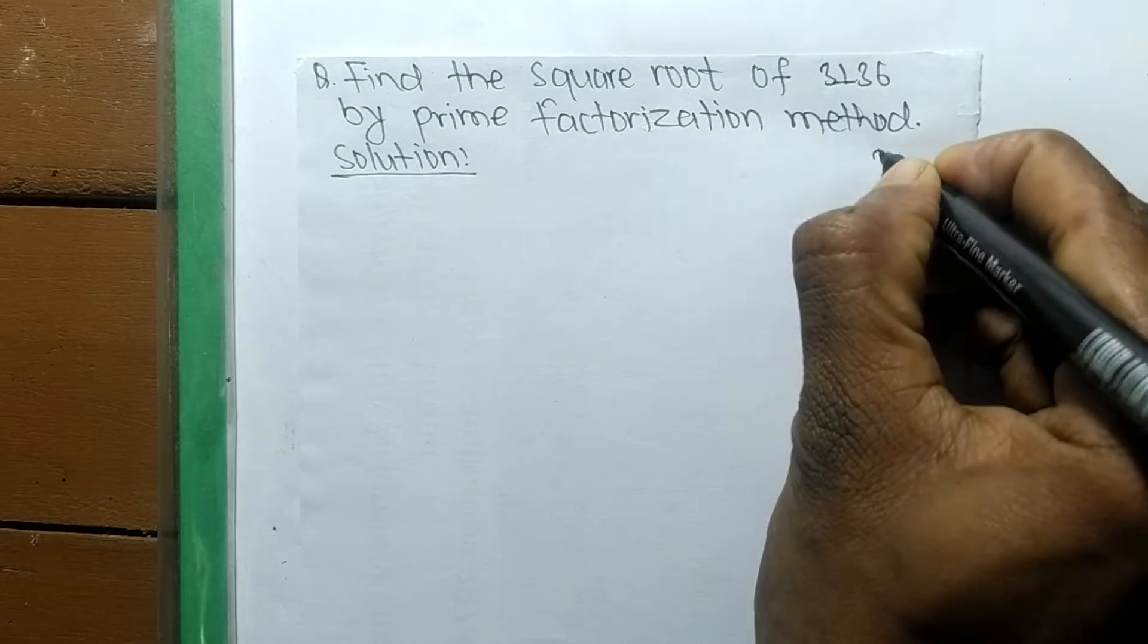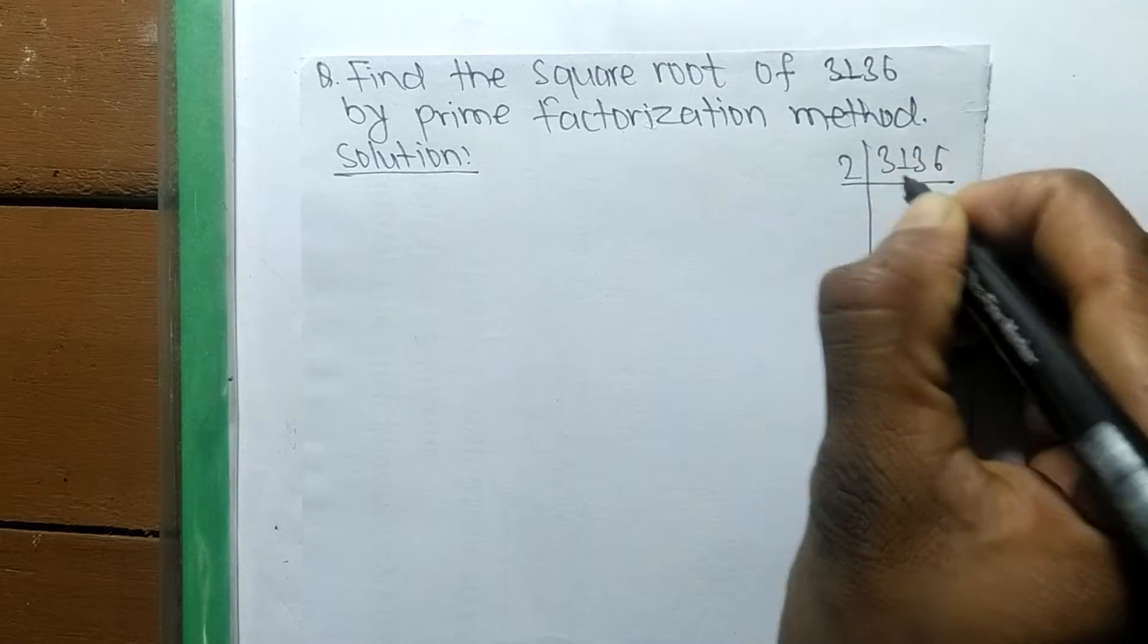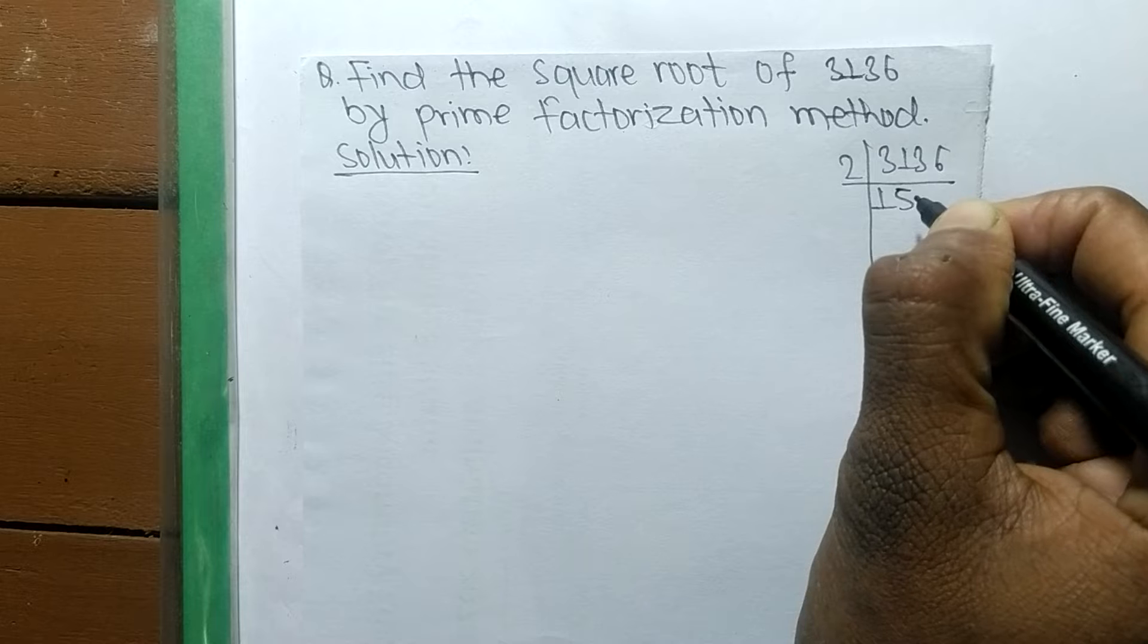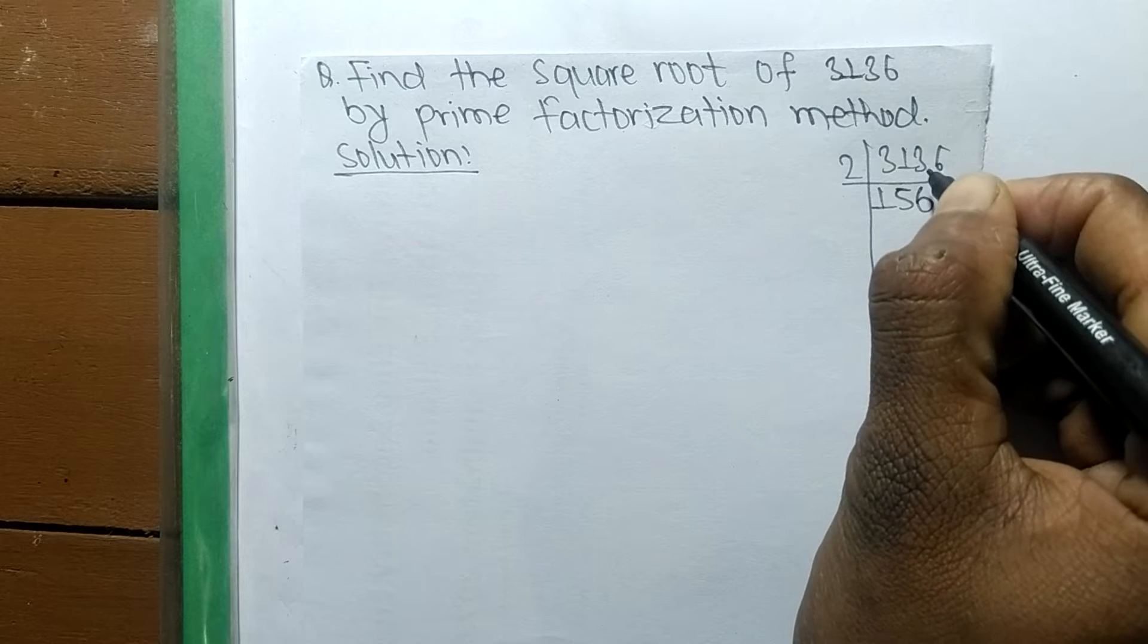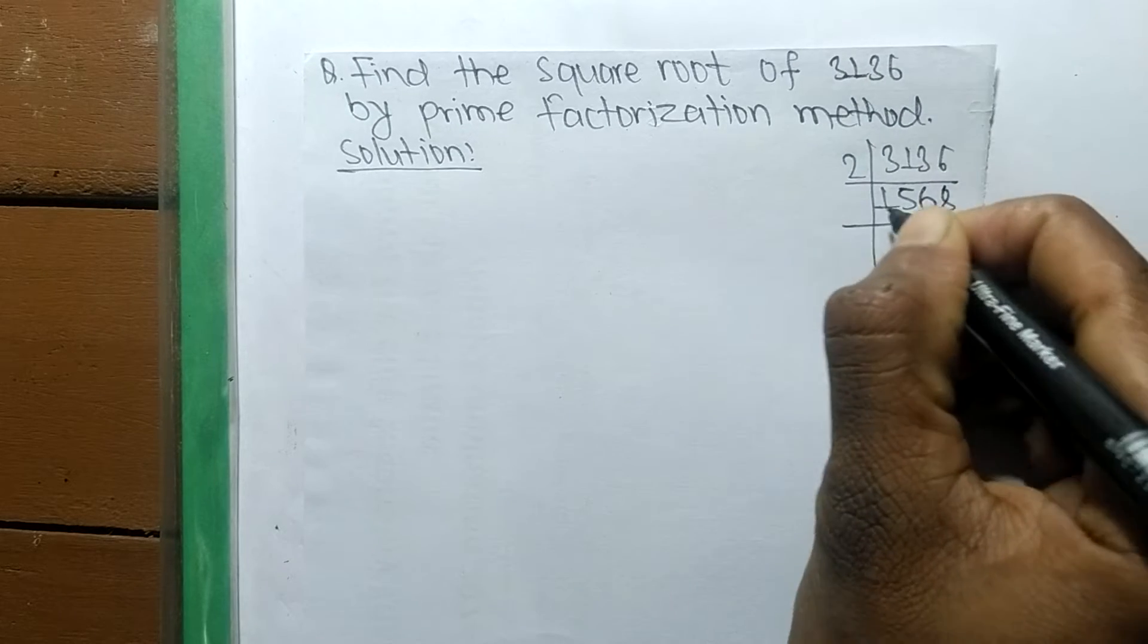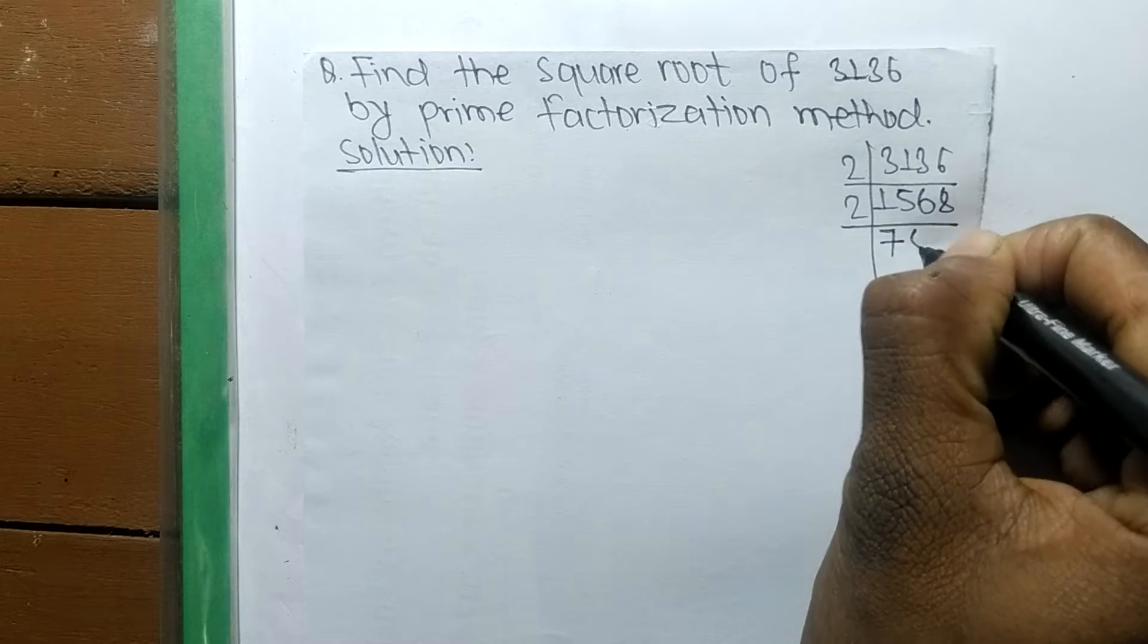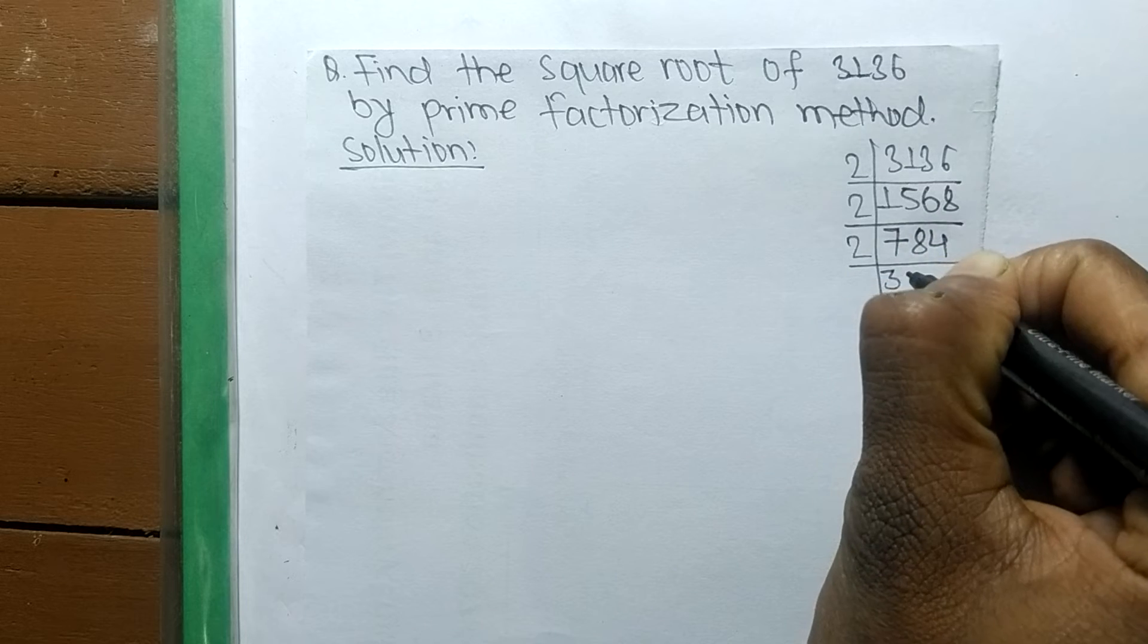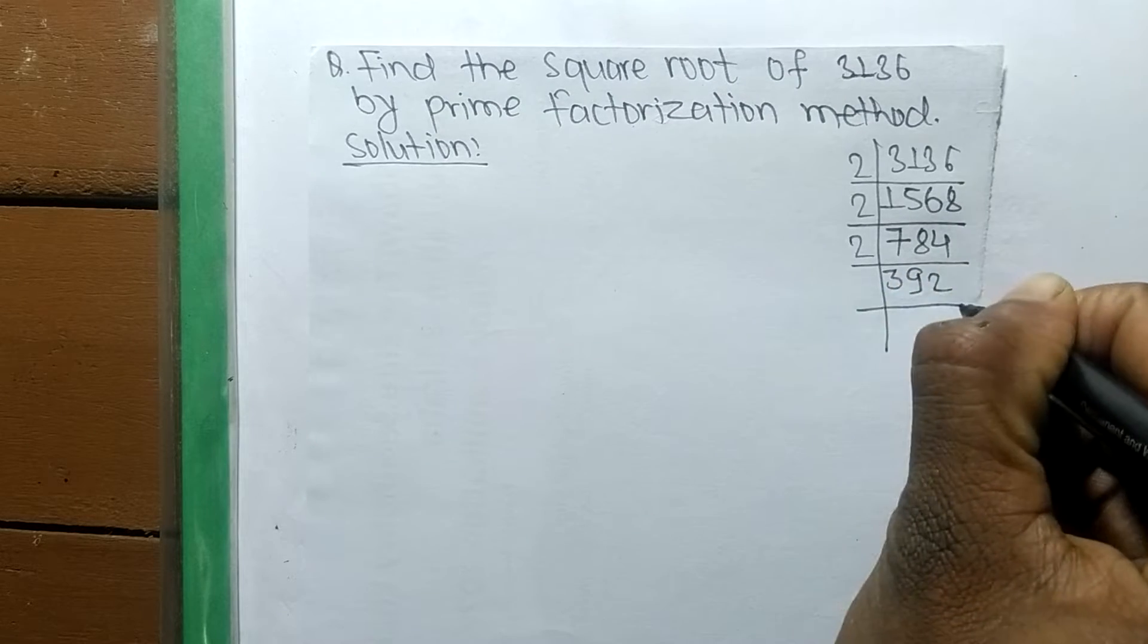So it is 3136. Now we can divide it by 2. 2 times 1568, 2 times 784, 2 times 392, 2 times 196, 2 times 98, 2 times 49.